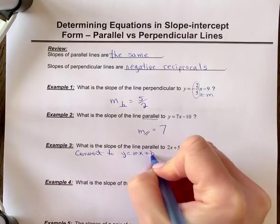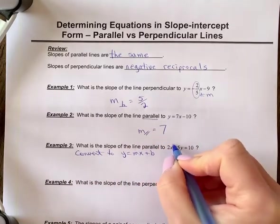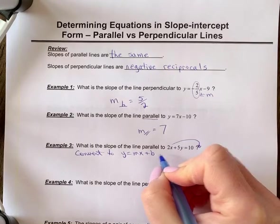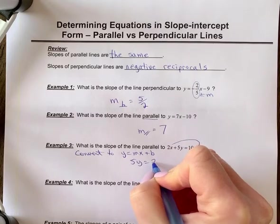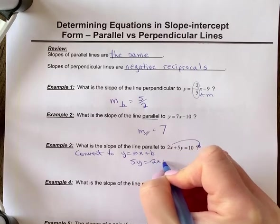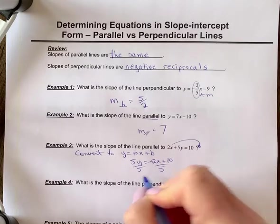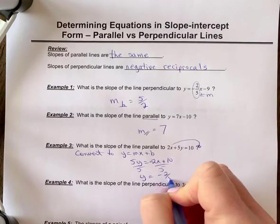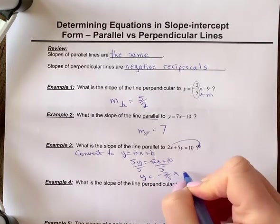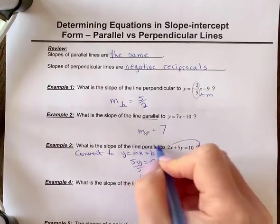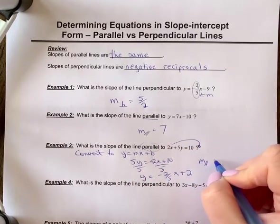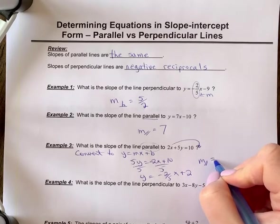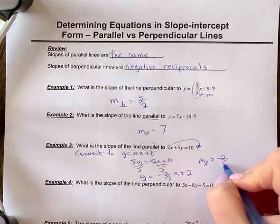So you need to convert to y equals mx plus b form first. So to do that, we're going to move 2x to the other side. So we're going to get 5y equals negative 2x plus 10. Divide off the 5. y is equal to negative 2 fifths x, 10 divided by 5 is plus 2. So if it's parallel, this slope is negative 2 fifths. The parallel line would have the same slope. So it would also be negative 2 fifths.